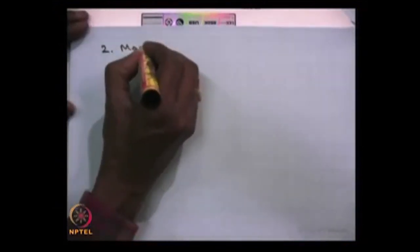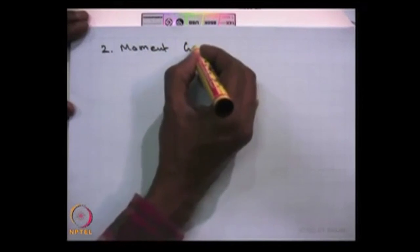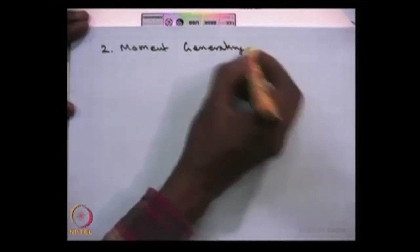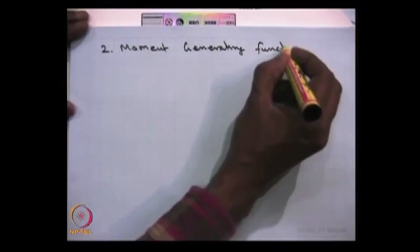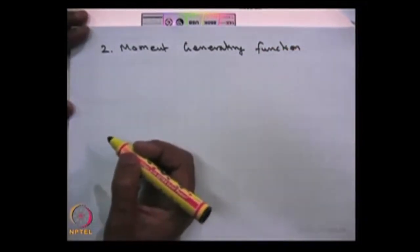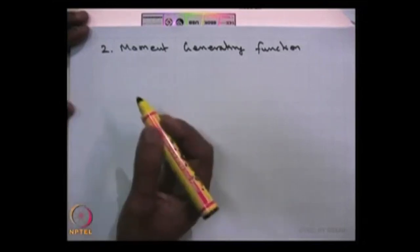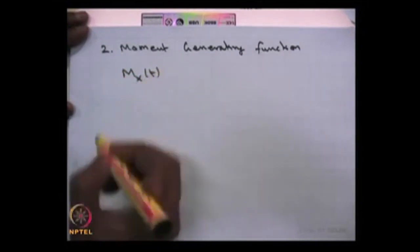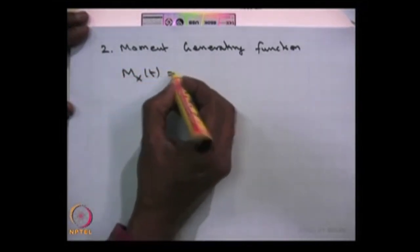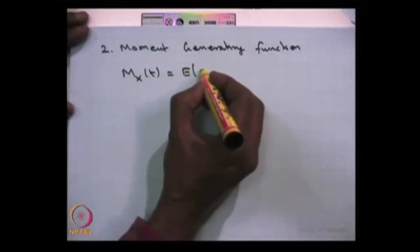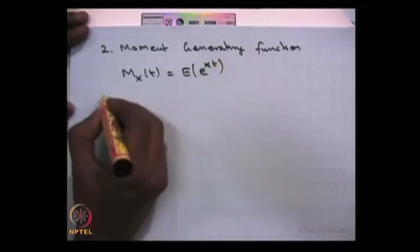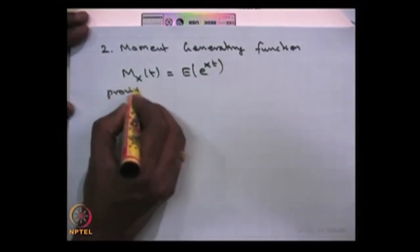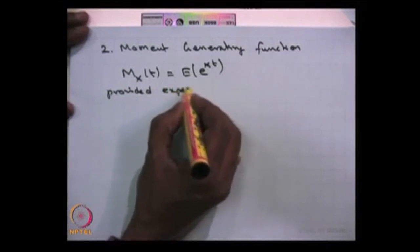The next generating function is the moment generating function. The moment generating function uses the moments of all order n — that means it uses the first order moment, second order moment, third order moment, and so on. You can define the moment generating function for the random variable X as a function of t, that is nothing but the expectation of e power (x times t), provided the expectation exists — that condition is very important.